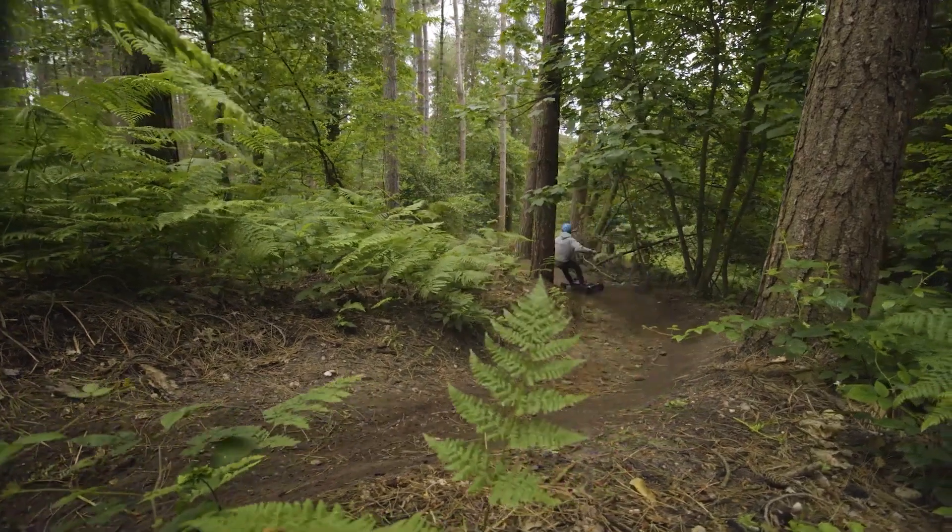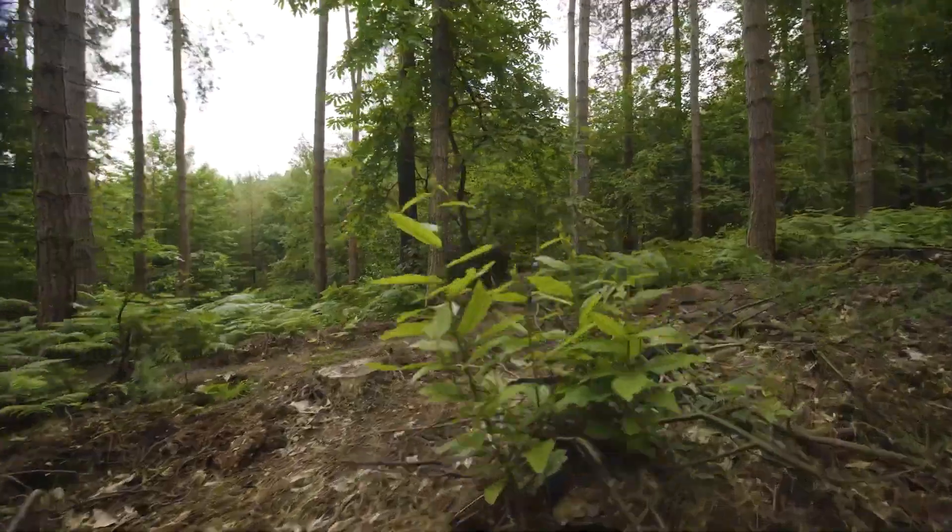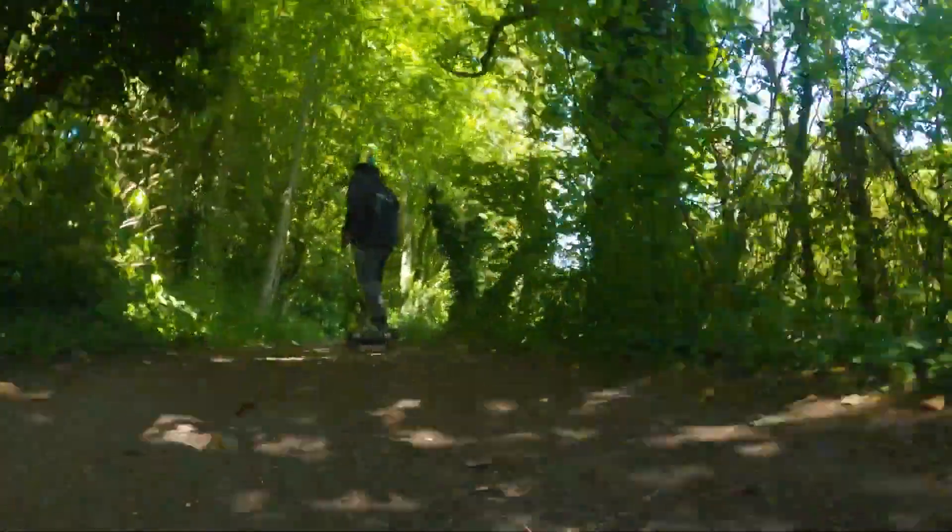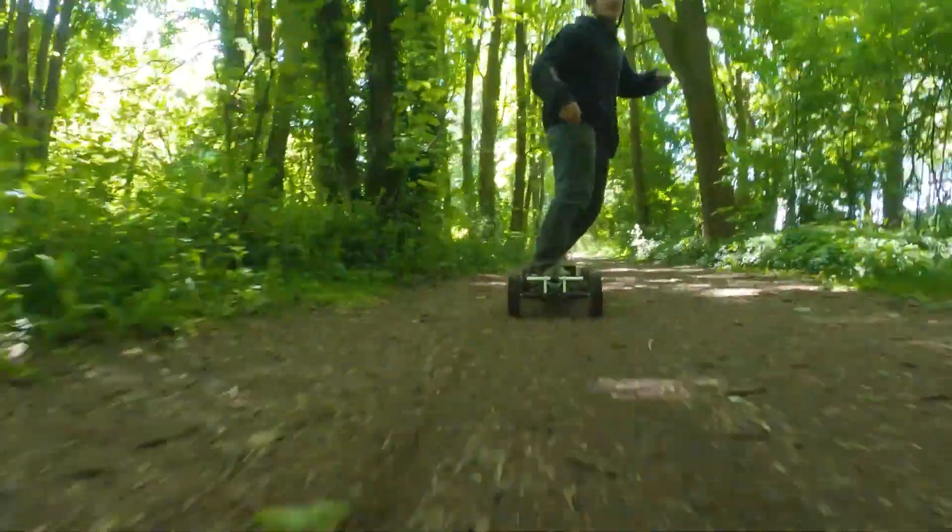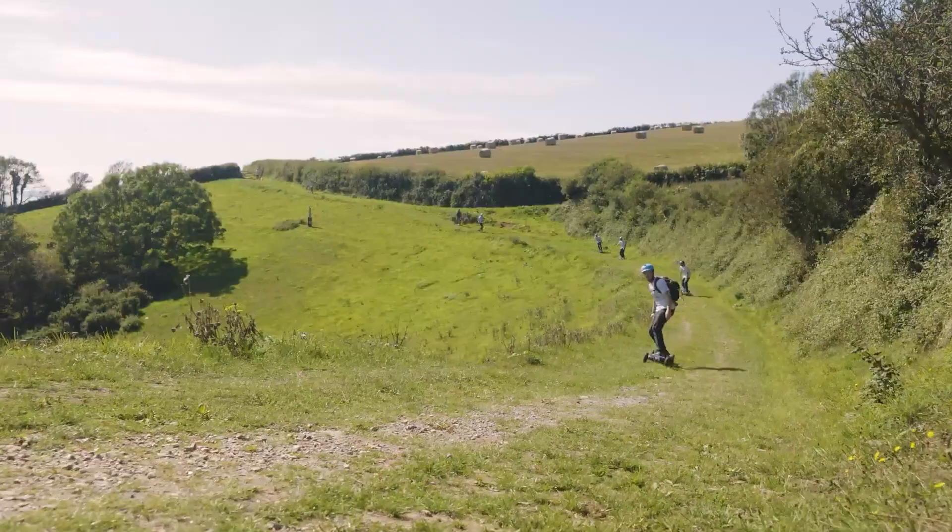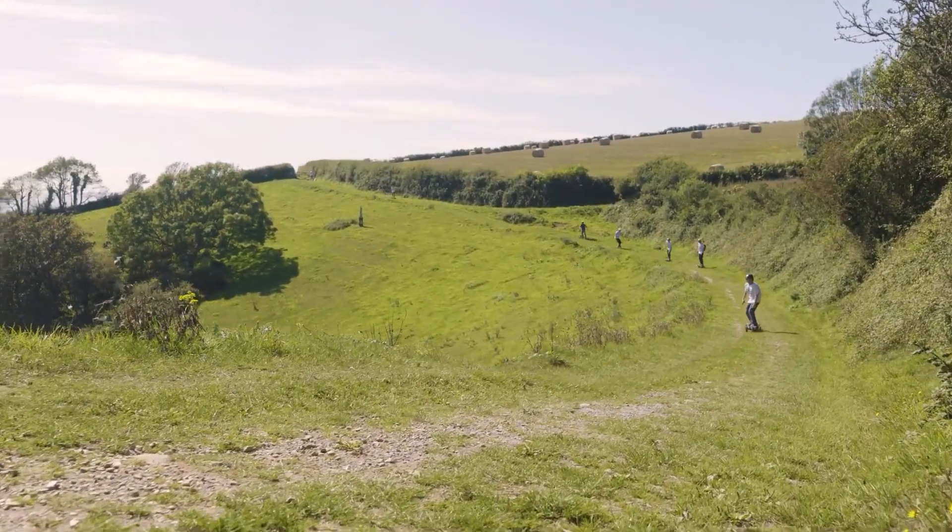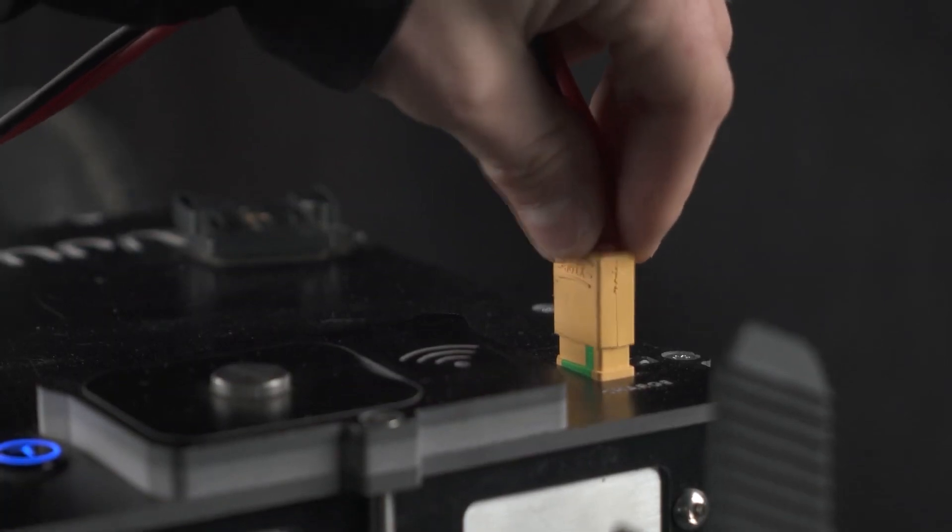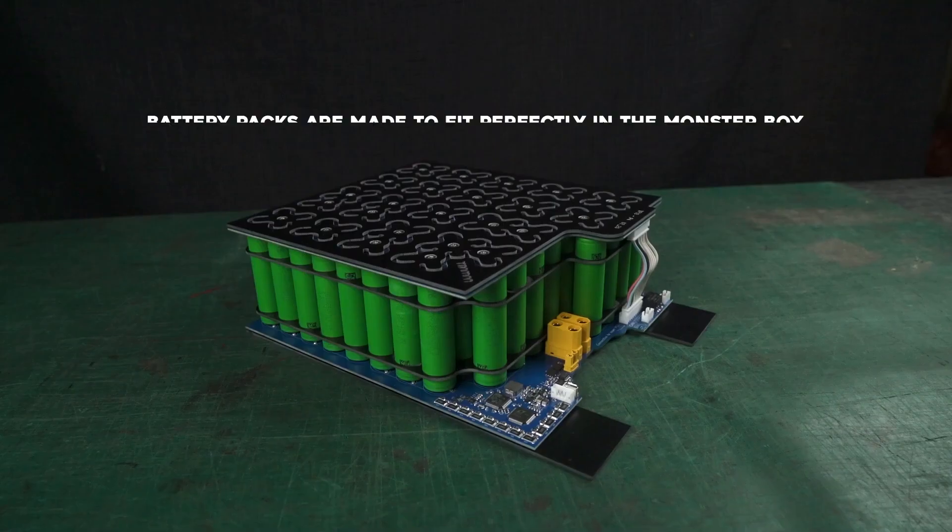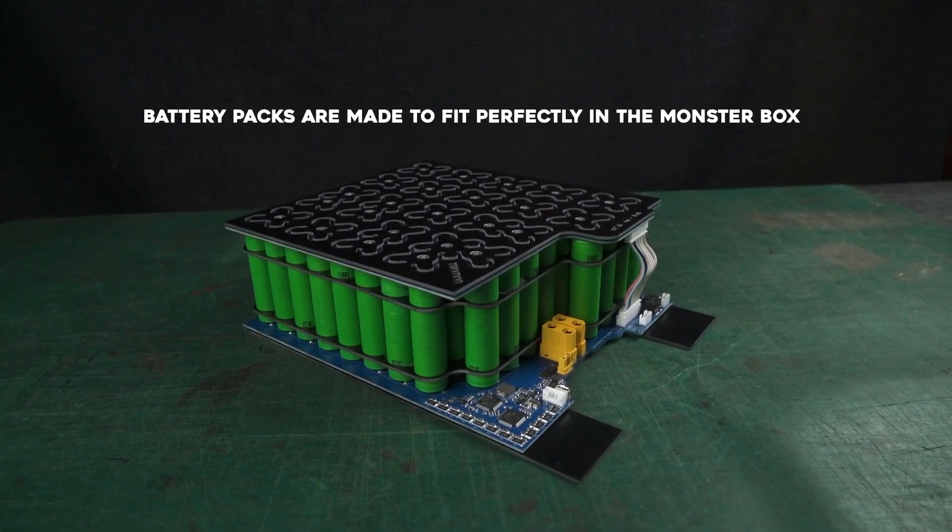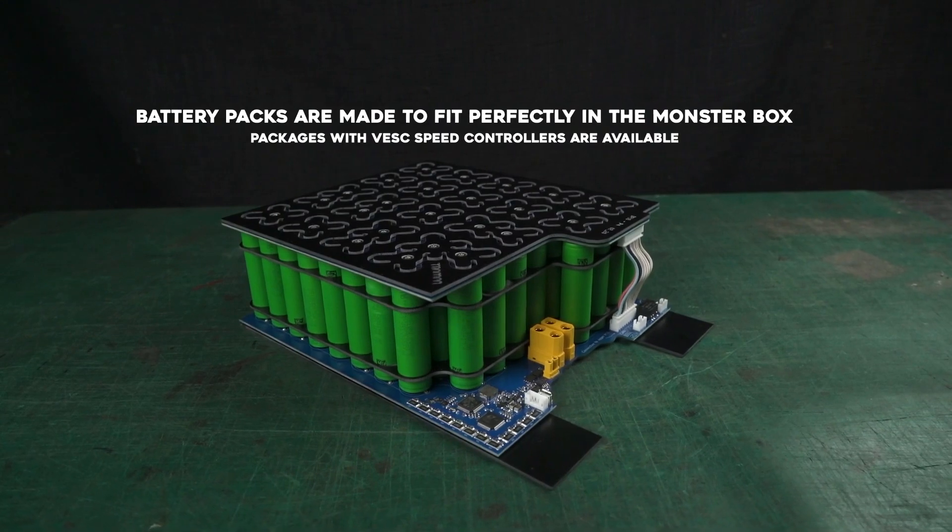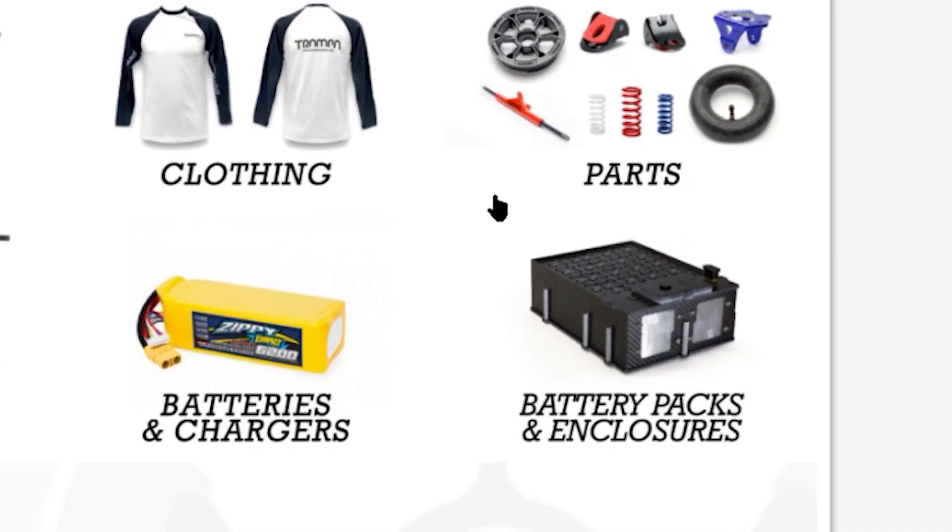Pack capacity is roughly one kilowatt hour, depending on your choice of cells. It will take just over an hour and a half to charge to 100% with a 12 amp charger. These are all specs on the 18650 pack. For full information on the 21700 pack, visit the page on the Trampa website.